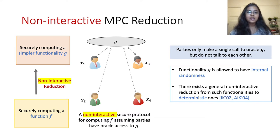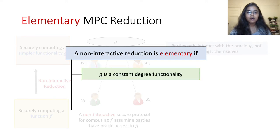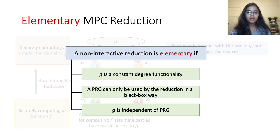In this work we consider the notion of elementary reductions. These are non-interactive reductions where the function g is a constant degree function. Moreover, the reduction is only allowed to make use of a PRG in a black-box way, which additionally means that g is independent of the PRG. Such black-box restrictions typically make things highly efficient, and this notion of elementary reduction also captures many classical reductions, as we will see going forward.